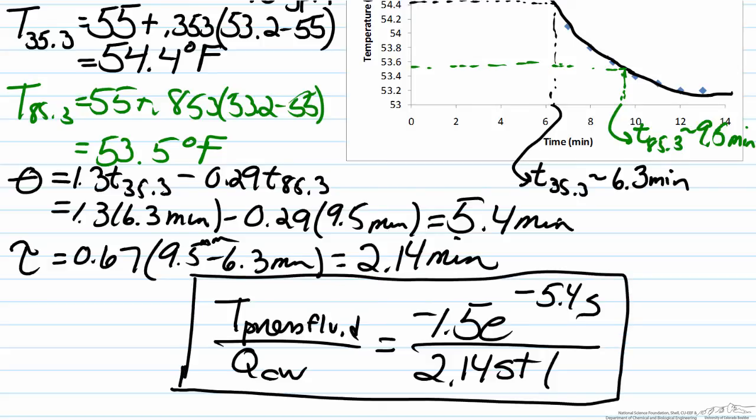So an important point to note here is the fact that these were all done approximately using the graph that we have. These evaluations of the 35.3 and 85.3 could have been improved if the graph had a bit more graduated lines on it, but still the process that we have done here is unchanged.